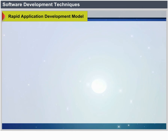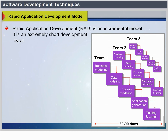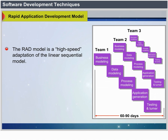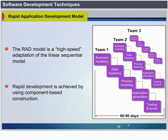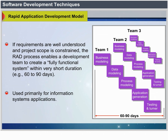Rapid Application Development Model. RAD is an incremental model with an extremely short development cycle. It is a high-speed adaptation of the linear sequential model, achieving rapid development through component-based construction. If requirements are well understood and project scope is constrained, the RAD process enables a development team to create a fully functional system within 60 to 90 days. It is used primarily for information system applications.